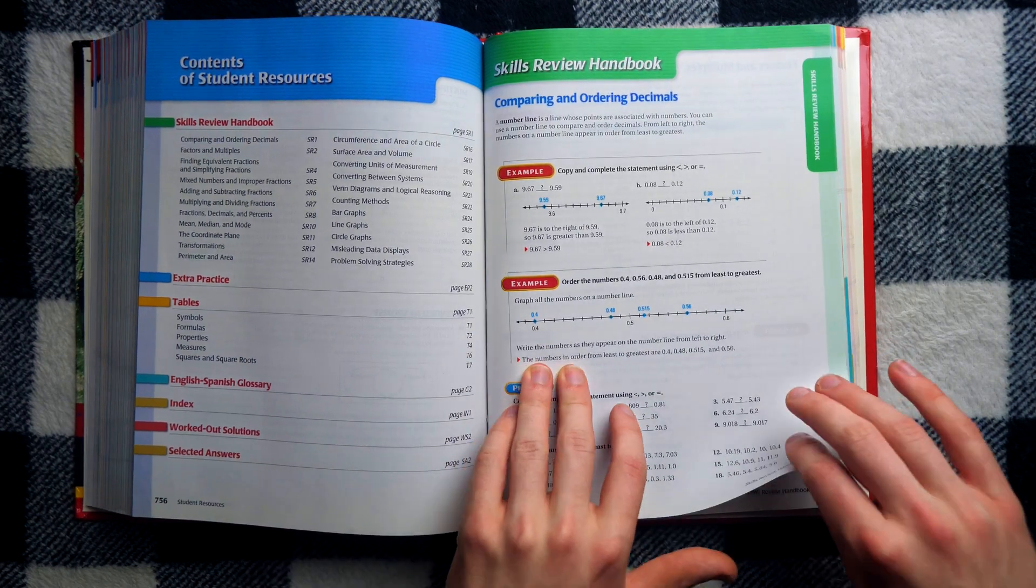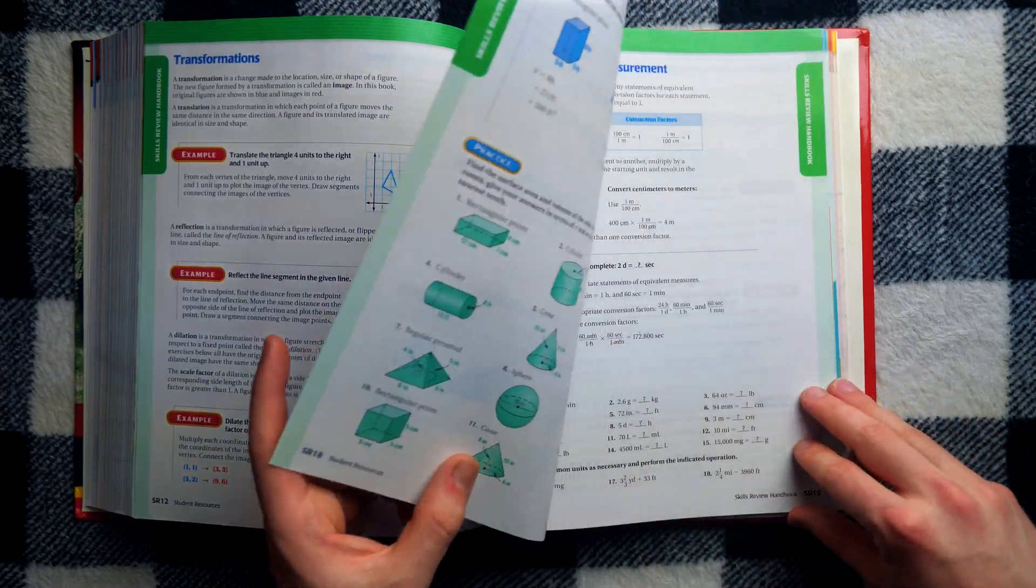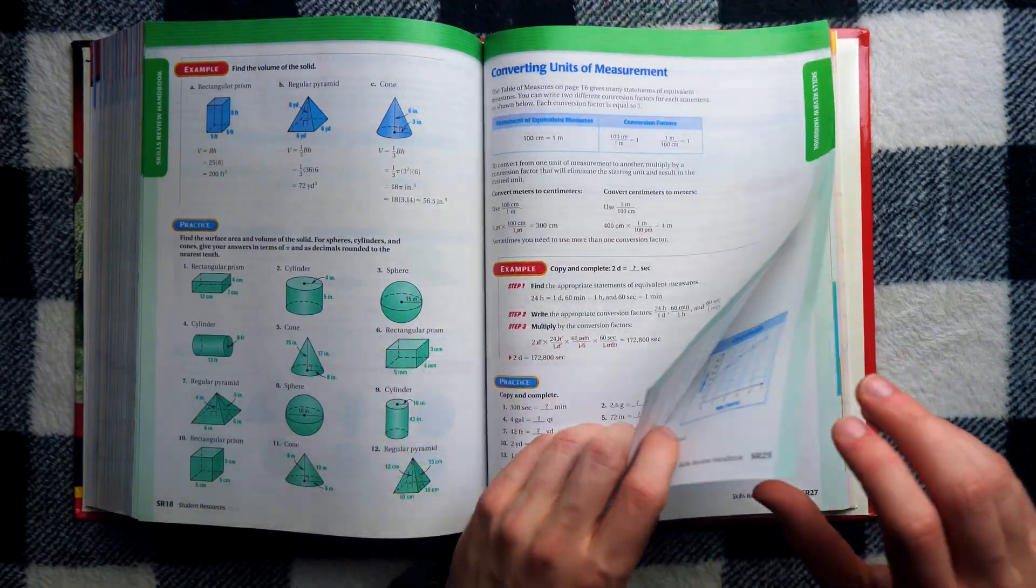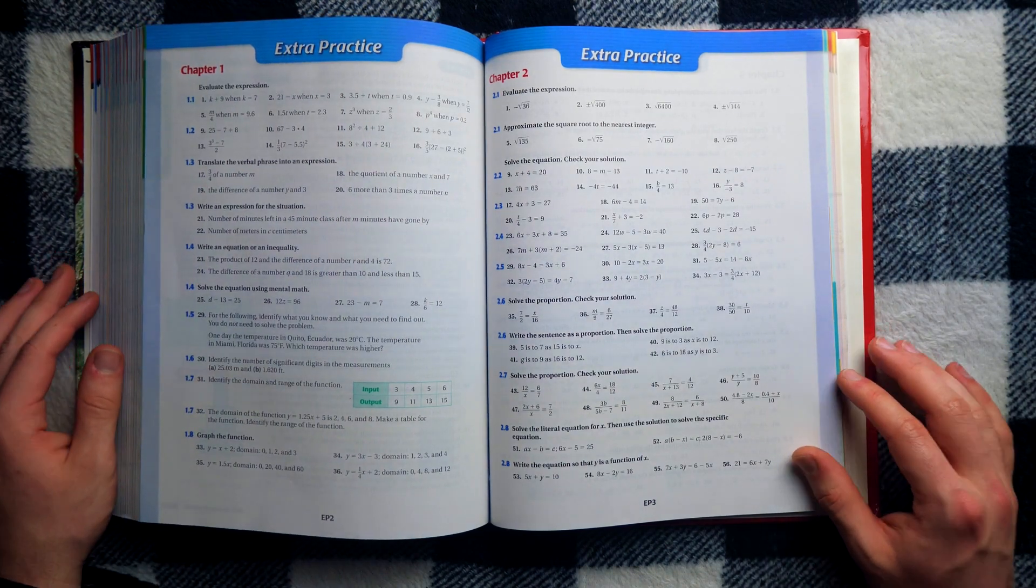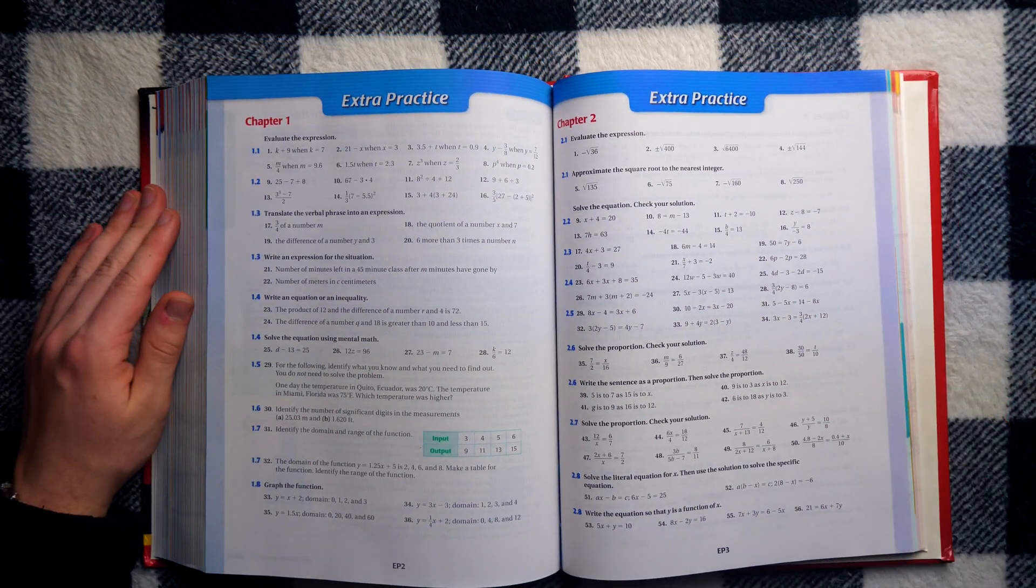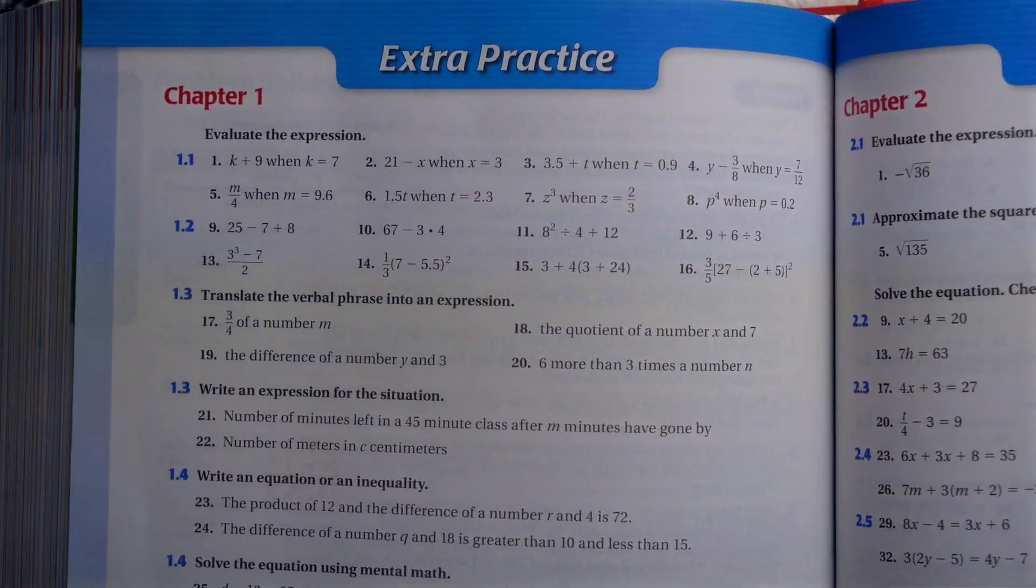So here you got a recap. Here's all the things you're supposed to learn. Here's a bunch more examples, because why not? But then you get to the blue section. There you go. New Game Plus, buddy. Look at that. You thought you were done. You thought you did all the practice and all the problems you needed to. Fat chance.